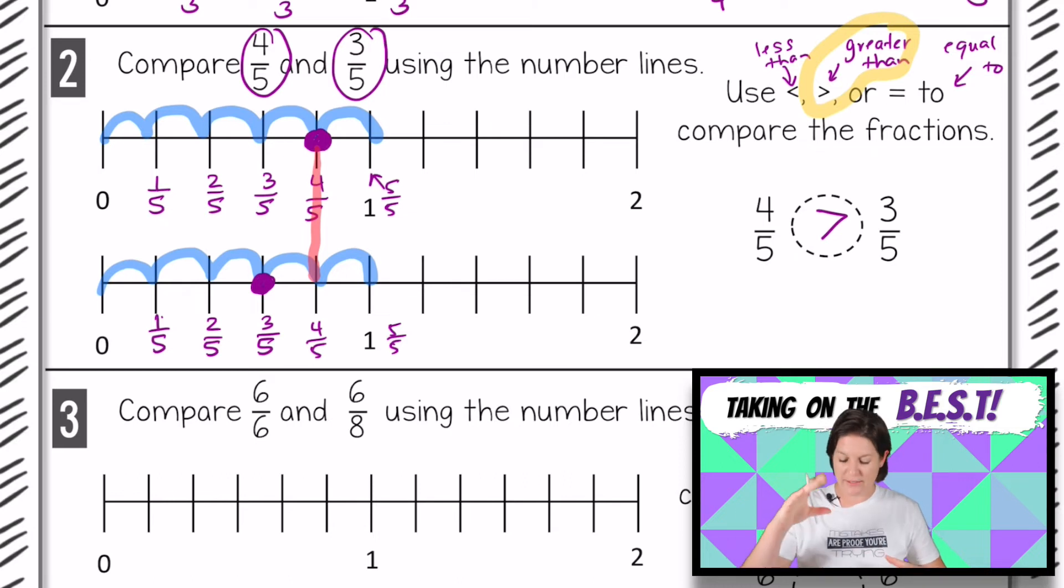And if you're thinking about it like that monster that wants to eat the larger value, it wants to go after the 4/5, so that's what it's doing. But most importantly, we need to make sure that we can read this correctly. 4/5 is greater than 3/5 because it goes further along on the number line to the right. Make sure that you have all of this copied. And when you're ready, join me for number three.